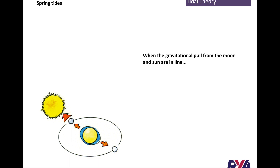75% of the earth is covered in water and that water is pulled by the sun and more so the moon. When they're in line it pulls a bigger bulge of water on the side that the sun and moon are, and on the opposite side. So when the moon's in line with or opposite to the sun we'll get a big tide, and that's called a spring tide.